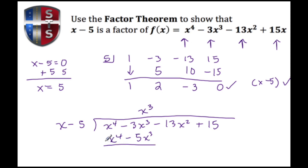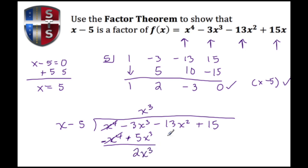In long division we subtract, so we change the signs of both terms: positive X to the fourth becomes negative, and negative 5X to the third becomes positive. The first terms cancel. Then negative 3X to the third plus 5X to the third gives positive 2X to the third, and we bring down negative 13X squared.